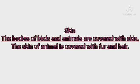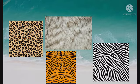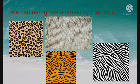Now let us discuss about the skin of animals. The bodies of birds and animals are covered with skin. Skin helps them to feel heat, cold and pain. The skin of animals is also covered with fur and hair. One of the reasons why all animals look different is that they have different patterns and textures of hair on their skin. We can recognize animals by their skin.